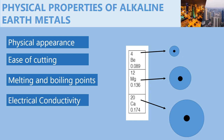As for electrical conductivity, alkaline earth metals are good conductors of heat and electricity because they contain delocalized electrons.